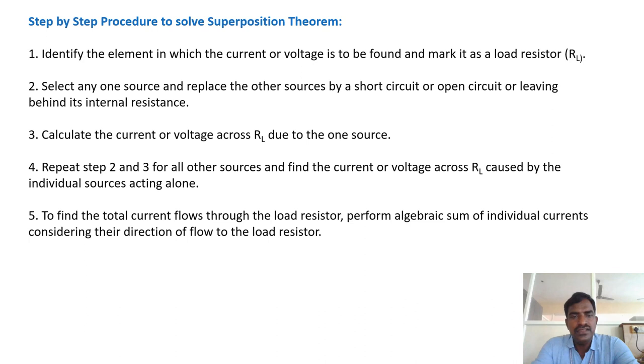Coming to the last step: to find the total current flowing through the load resistor, perform the algebraic sum of individual currents considering the direction of flow to the load resistor.